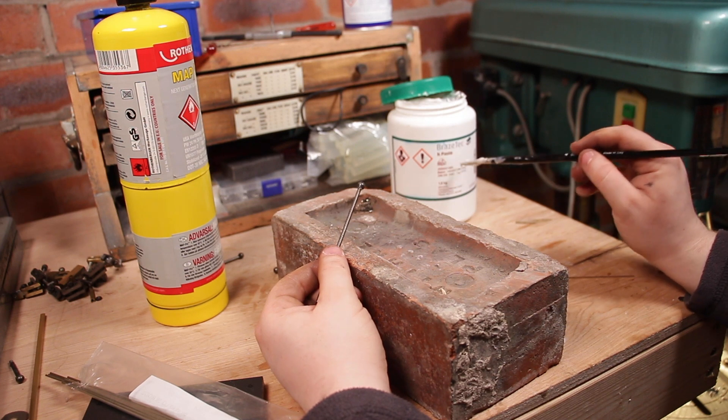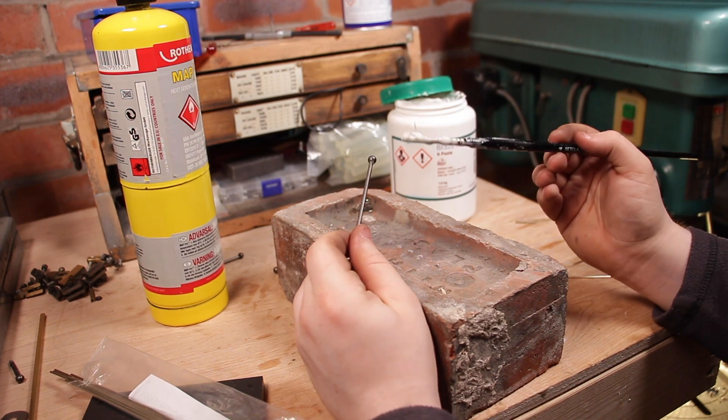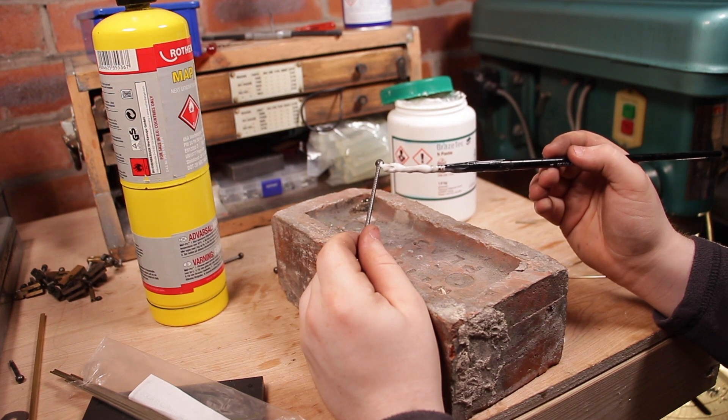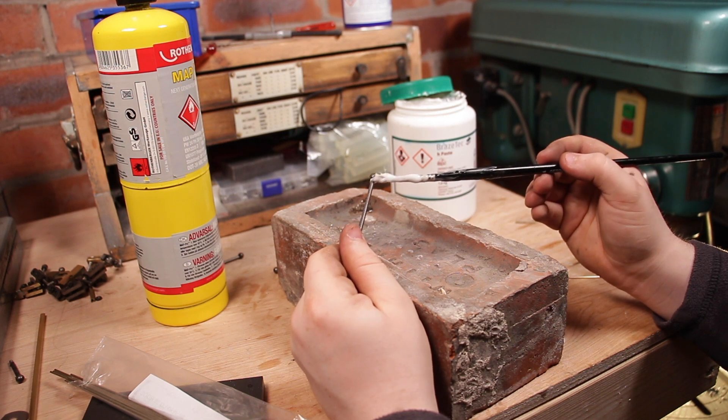So the next part is silver soldering the balls together. We're going to be using this Bracetech H-Paste, which is quite nasty. I'm just going to brush it on like that, which will help the silver solder to stick.